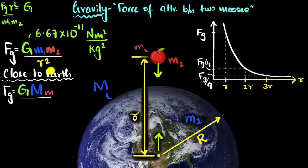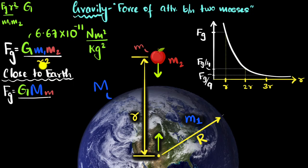So for all practical purposes, the distance will stay the same. Long story short, if you're close to Earth, we can approximate the distance between the center of the planet and the object as pretty much the radius of the Earth. And so if we plug that in, we'll just get R squared in the denominator.